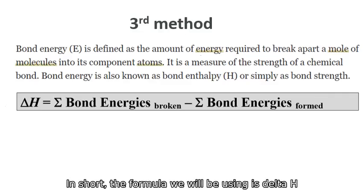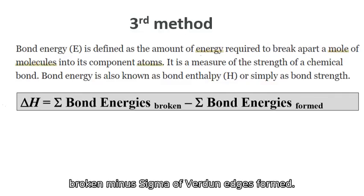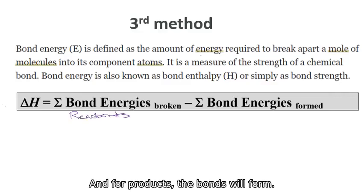So the formula we will be using is delta H equal sigma of bond energies broken minus sigma of bond energies formed. Bond energies broken are for reactants. So for reactants, the bonds will break, and for products, the bonds will form. Remember that. So this is the third method.